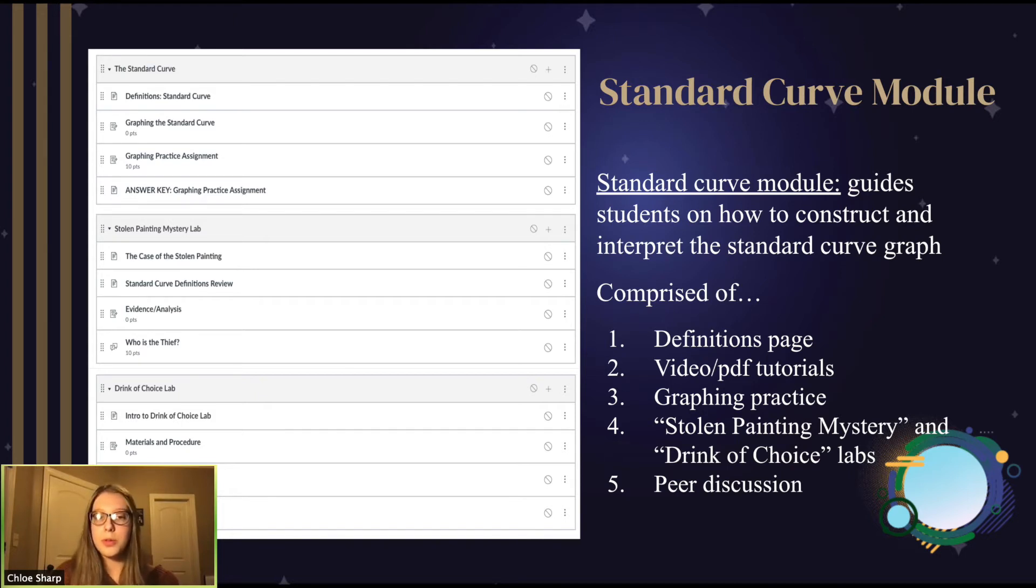The two key labs were the Stolen Painting Mystery Lab and the Drink of Choice Lab, both of which gave them practice utilizing a standard curve. The Stolen Painting Mystery Lab requires students to graph multiple standard curves and compare them to each other, while the Drink of Choice Lab required students to graph one standard curve and determine an unknown value. The Drink of Choice Lab also had a hands-on element to increase student engagement.